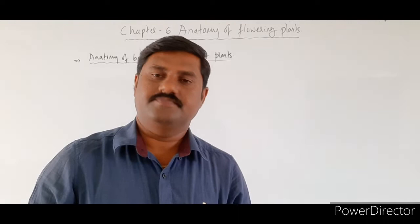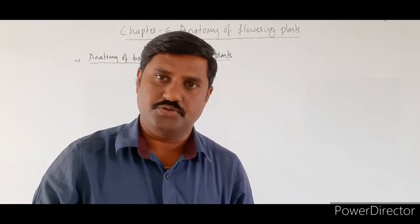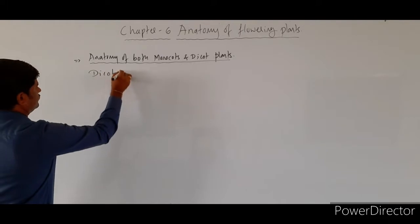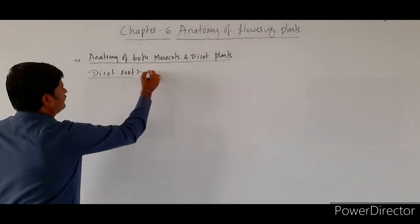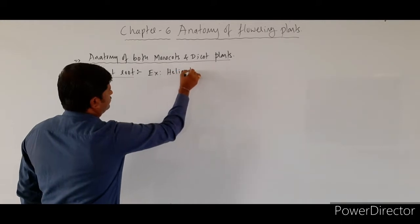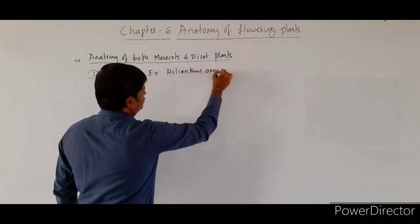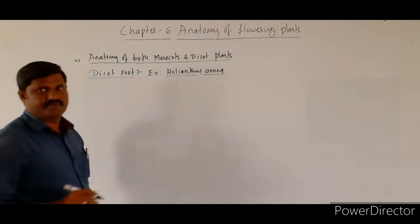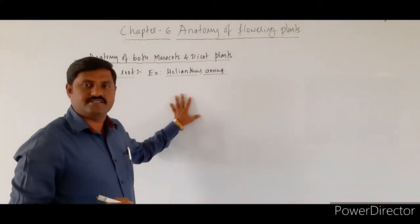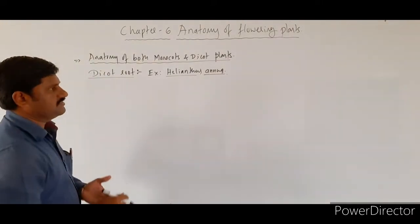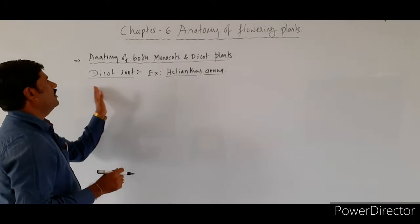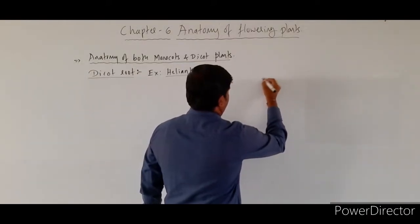We shall start with the study of the anatomy of dicot root. The example taken in the NCERT book is Helianthus annuus — the scientific name of sunflower. Sunflower root is taken as the example of a dicot root. How is the structure of this dicot root? Let us see what it consists of.